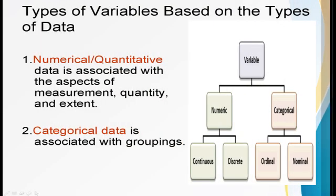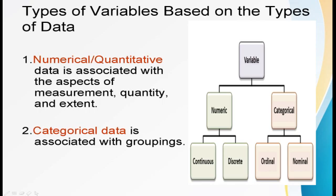There are types of variables based on the types of data. First is numerical or quantitative data, associated with aspects of measurement, quantity, and extent. Next is categorical data, which is associated with groupings.